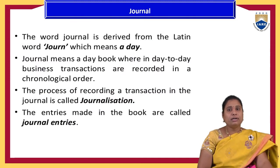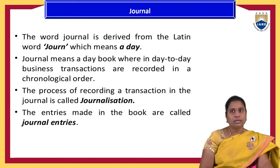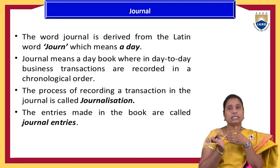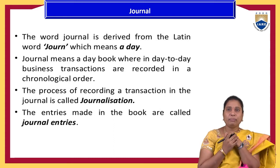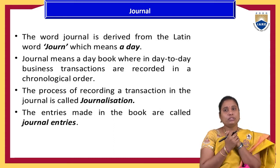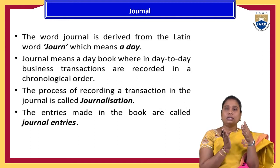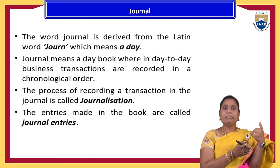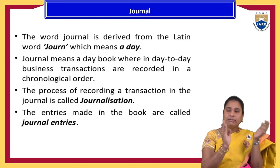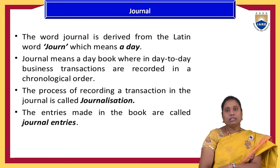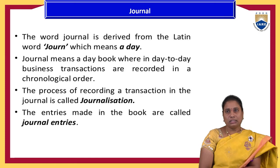The first method under the double entry mechanism is the journal. A journal is a day-to-day book maintained by business organizations in chronological order — that is, in a systematic order. The process of recording the transactions of the business is called journaling. For example, purchasing goods is one transaction: goods come in and cash goes out of the organization. That division is called journal entries.